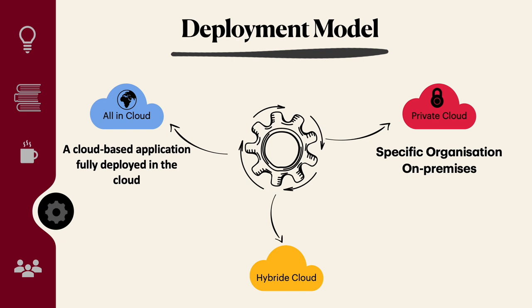The second is a private cloud, where resources are deployed on-premises using virtualization and resource management tools. Sometimes private clouds use AWS services, like AWS GovCloud, which is a private cloud requiring authorization and authentication. The third is the hybrid cloud — a mix of cloud and on-premises. Part of your resources are in the cloud and part remain on-premises, such as keeping sensitive data on-premises while cloud infrastructure communicates with that on-premises data.